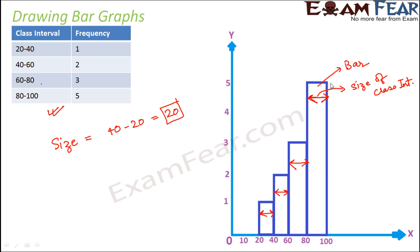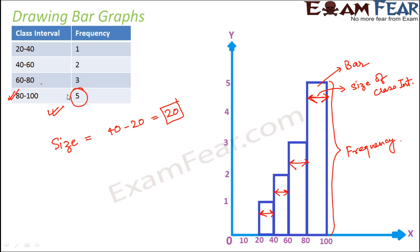What about the height? The height of each bar tells us the frequency. For example, the last bar is for the class interval 80 to 100. For 80 to 100, the frequency is 5, so the height of that bar goes up to 5.